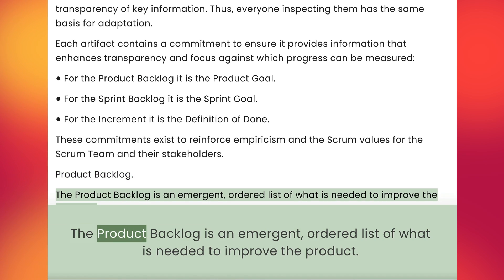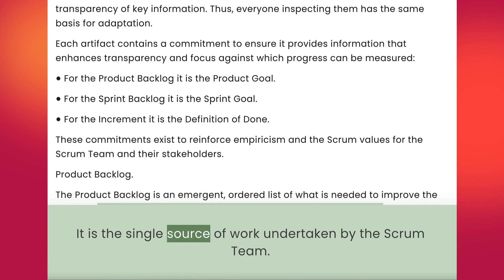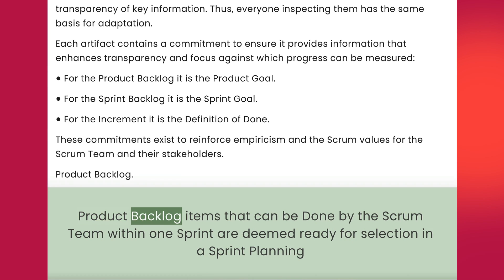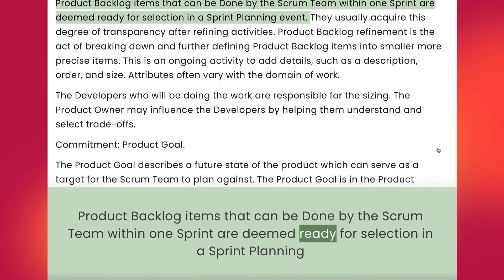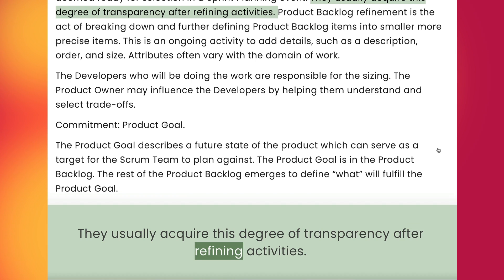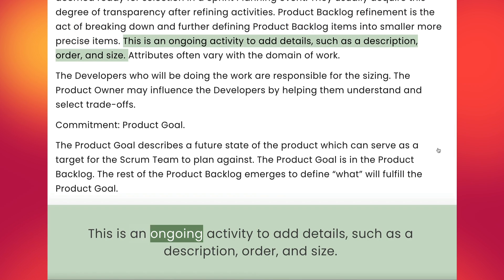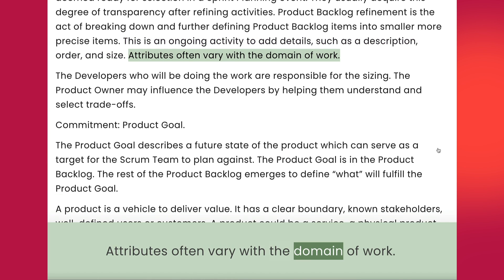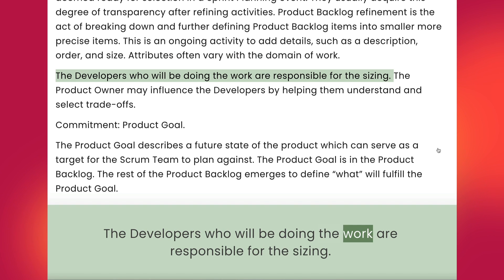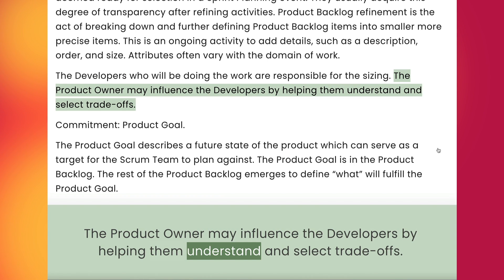Product Backlog. The product backlog is an emergent, ordered list of what is needed to improve the product. It is the single source of work undertaken by the Scrum team. Product backlog items that can be done by the Scrum team within one sprint are deemed ready for selection in a sprint planning event. They usually acquire this degree of transparency after refining activities. Product backlog refinement is the act of breaking down and further defining product backlog items into smaller, more precise items. This is an ongoing activity to add details such as description, order, and size. Attributes often vary with the domain of work. The developers who will be doing the work are responsible for the sizing. The product owner may influence the developers by helping them understand and select trade-offs.